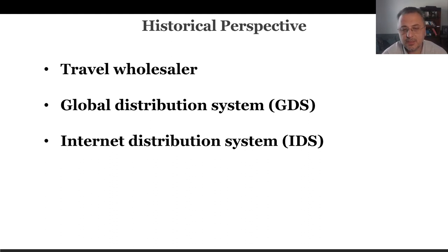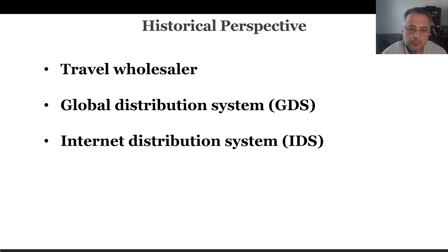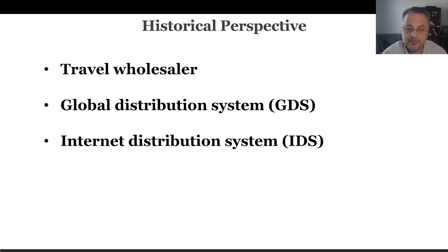Later, starting from the airline industry, what we call the GDS or Global Distribution System was developed. Think for a second: a person wants to go to New York using airline A and return in a week using a different airline, say airline B, due to time scheduling. How are you going to sell that ticket? So they developed GDS to electronically communicate their availability and reserve from each other.